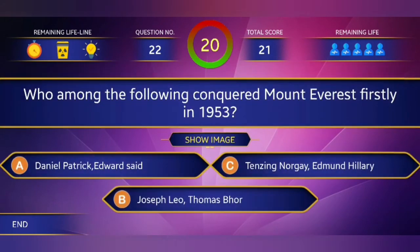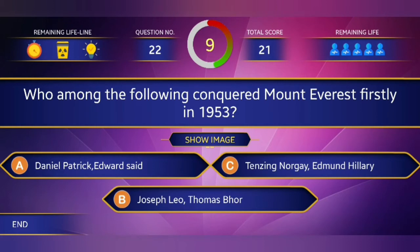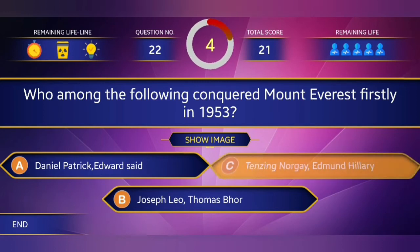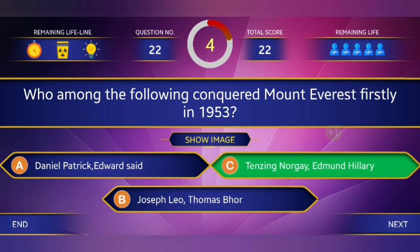Question 22: Who among the following conquered Mount Everest firstly in 1953? Answer: Tenzing Norgay and Edmund Hillary.